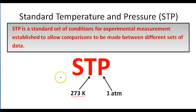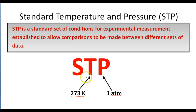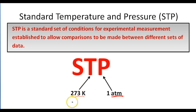When working with the ideal gas law, you might see STP, or Standard Temperature and Pressure. STP is a standard set of conditions established to allow comparisons between different experiments. For a high school chemistry class, whenever you see STP, the temperature is always 273 K and the pressure is always one atmosphere.